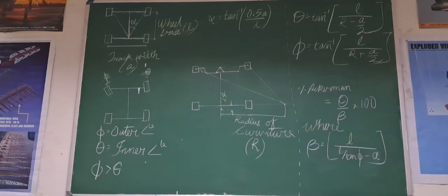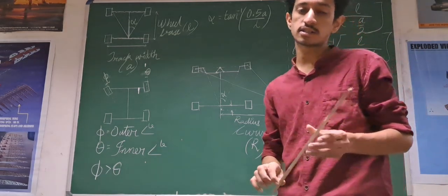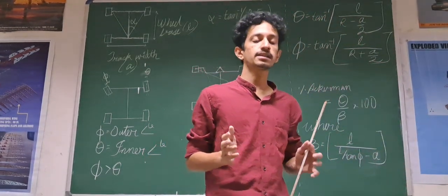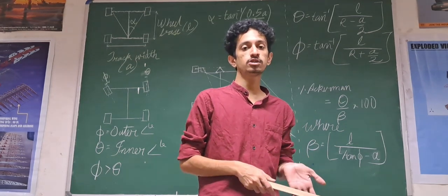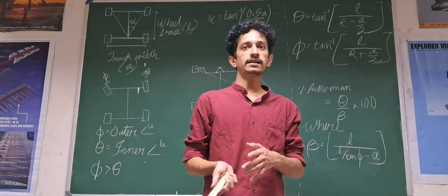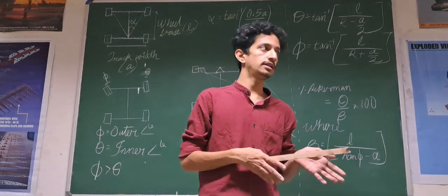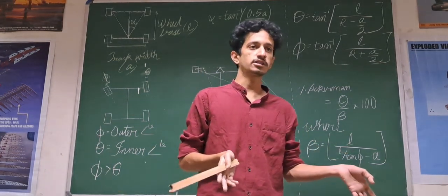Now, once we analyze our steering system that it matches with Ackerman geometry, we need to know how close it is to the ideal Ackerman geometry. Or else, we can have it in a way that when you are turning at a lesser radius of curvature, you can be oversteering or understeering or at higher angles it might be oversteering or understeering.